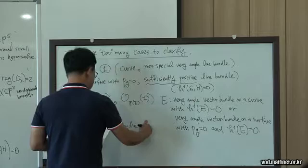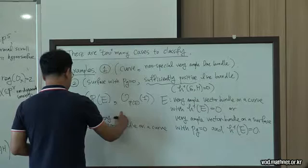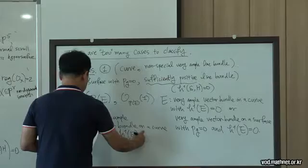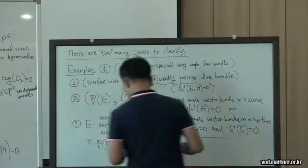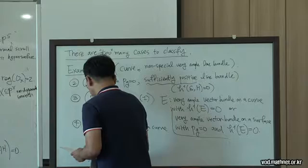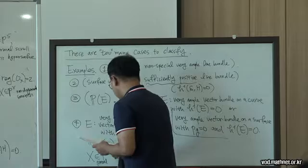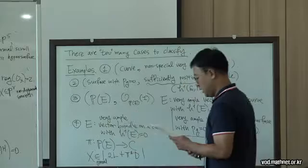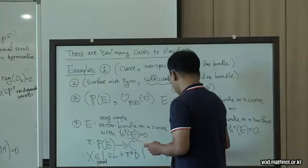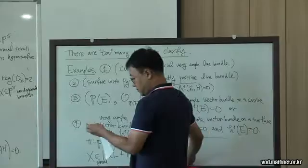We also consider a very ample vector bundle on a curve with H^1 equal to zero. Let pi be the canonical projection, and choose a general member in the linear system 2L + D, where D is any divisor on the curve and L is the tautological line bundle on PE. This pair also satisfies the 2-regularity condition.